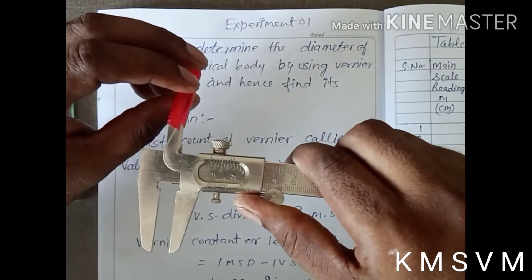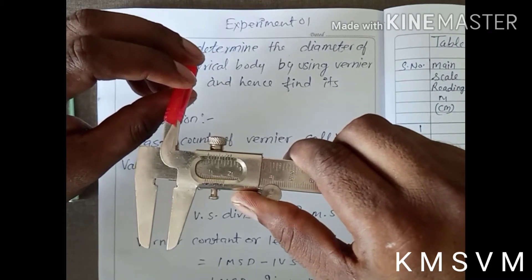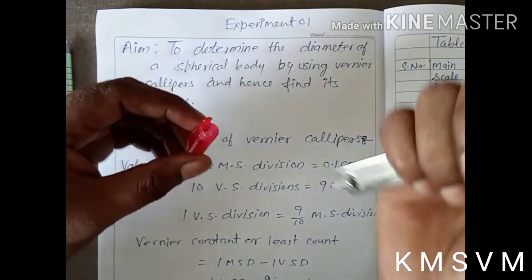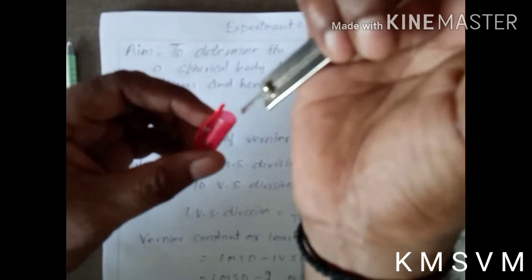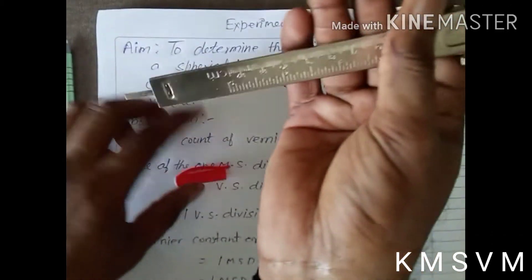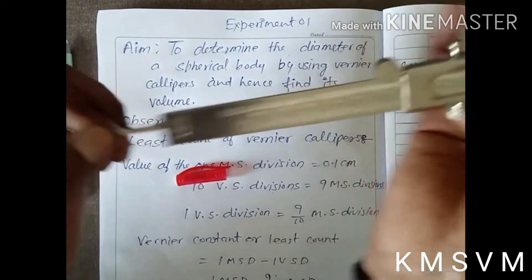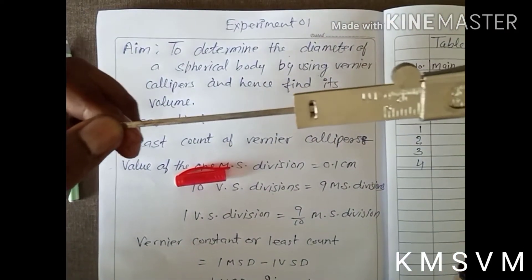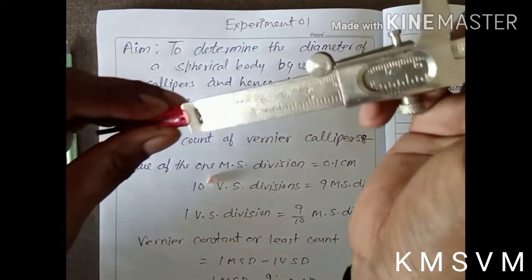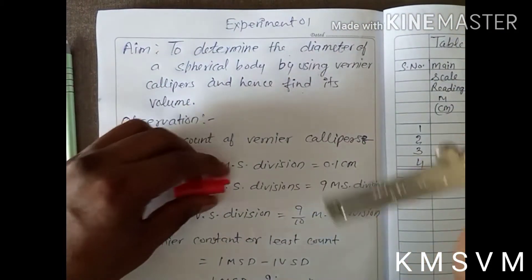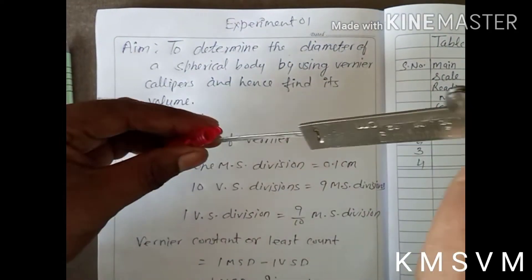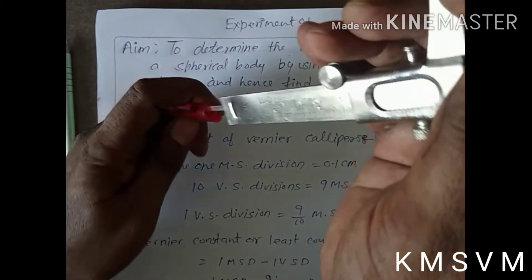We can put the cap, and by the strip we can use the vernier calipers the other way. This strip is used to find the depth of any object. When we find the depth of any object, we will use the strip.